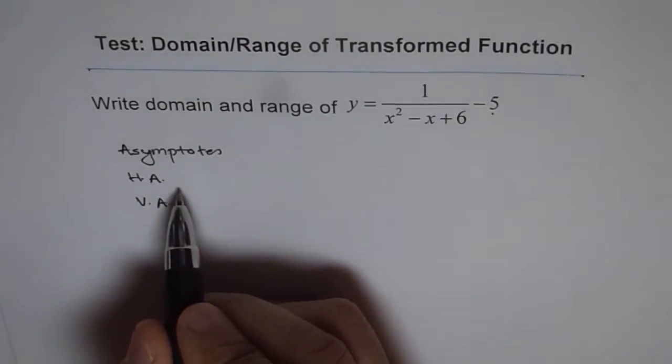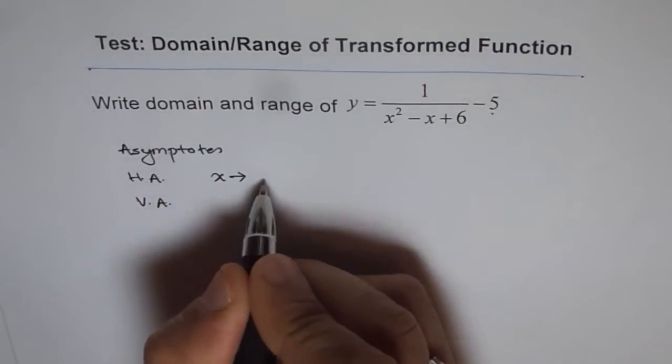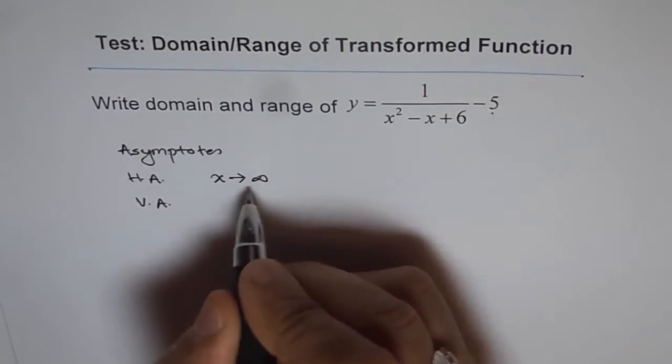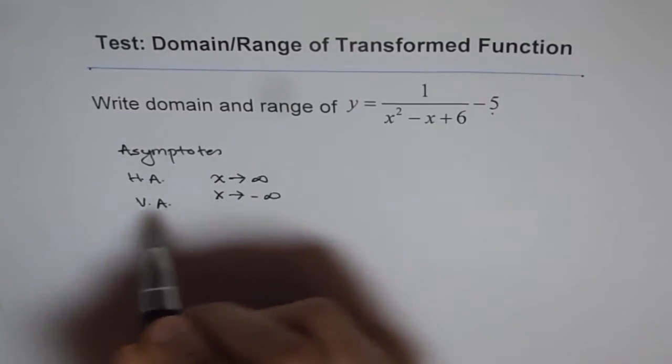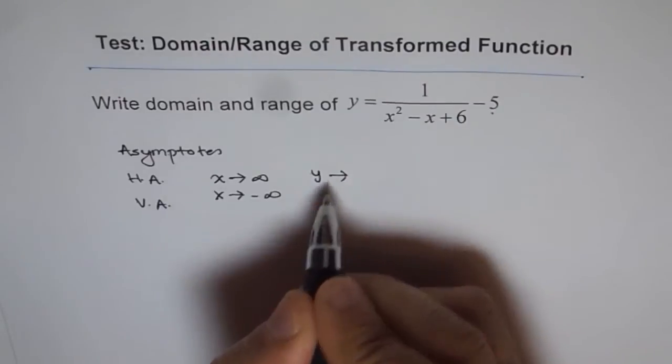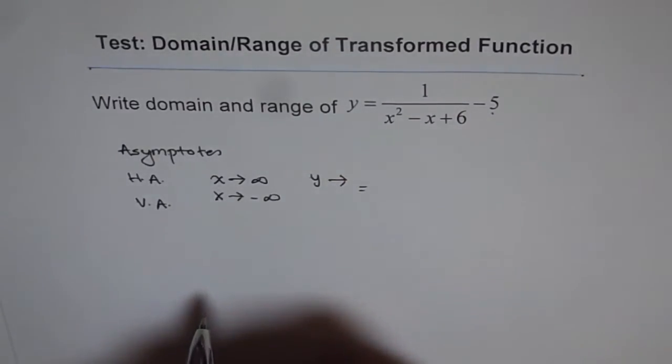What is a horizontal asymptote? A horizontal asymptote is when x is approaching a large value, whether it is positive infinity or it is approaching minus infinity, will y approach a fixed value. That fixed value is the horizontal asymptote.